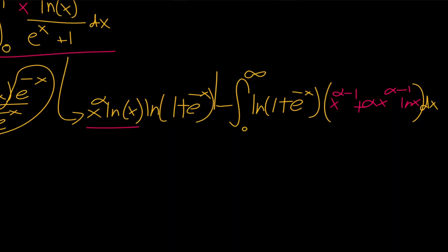Employing the bounds, we're evaluating from 0 to infinity. Clearly this whole boundary term goes to 0, because at the upper limit the e to the minus infinity goes to 0, giving us natural log of 1, so the expression goes to 0. Taking the limit as x goes to 0, the natural log term goes to negative infinity but the x to the alpha term goes to 0, so that limit is also 0. So this entire boundary term vanishes.